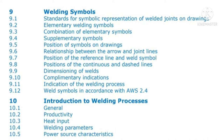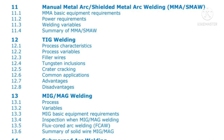The tenth topic is an introduction to welding processes. In this chapter we look at heat input, welding parameters, and productivity. This exam program covers only four welding processes. We also cover how to calculate heat input, parameters for each welding process, power sources, and characteristics. The four welding processes are SMAW, TIG welding, MIG/MAG welding, and submerged arc welding (SAW).